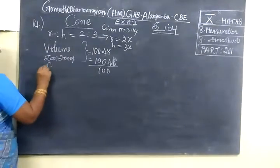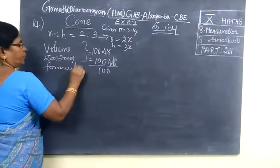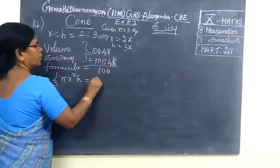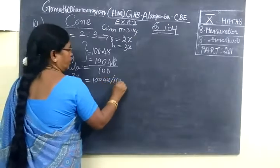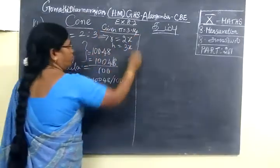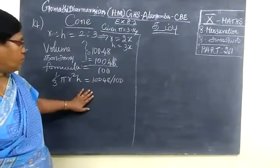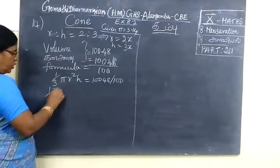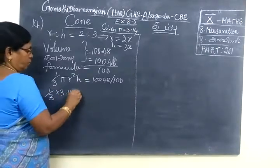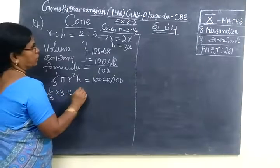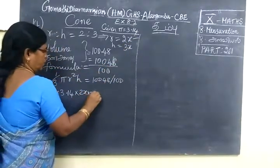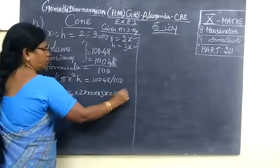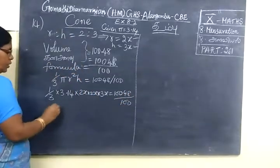So formula equals answer. You can write formula equals answer. So 1 by 3 pi R squared H equals 100. This pi value is 3.14, it is given in the question itself. So 3.14 into R square. R equals 2K, so 2K into 2K. Then H is 3K equals 100. This equals 3.14.